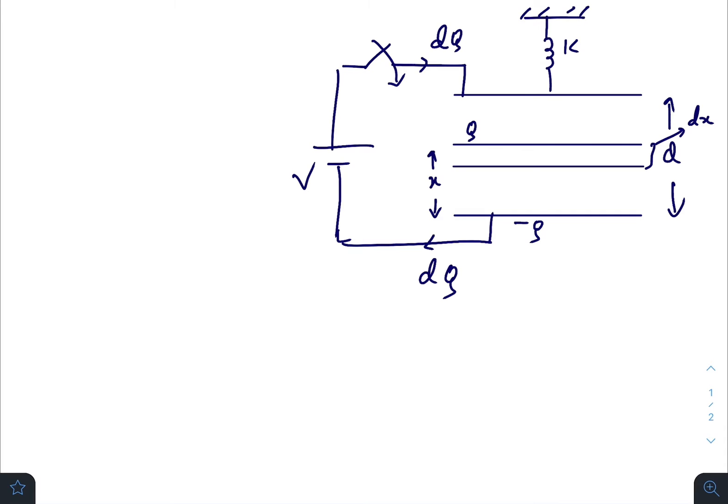Work done by the battery is V·dQ/2. Work done by the spring is -K(D-X)·dx, negative sign because the force of the spring is in the upward direction and the displacement of this plate is in the downward direction. And Q²/(2Aε₀)·dx, this is the force applied on the upper plate due to the lower plate.